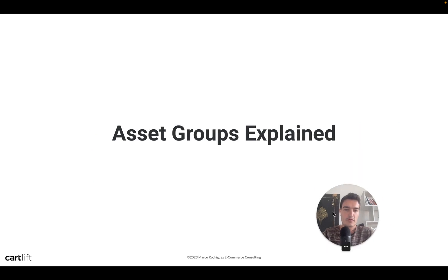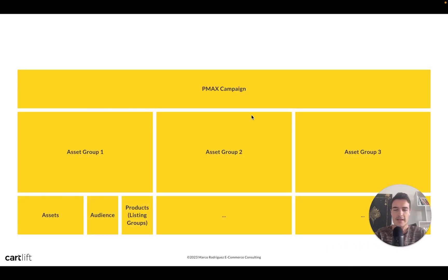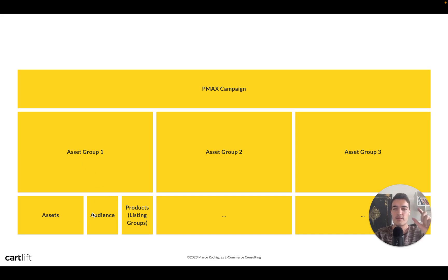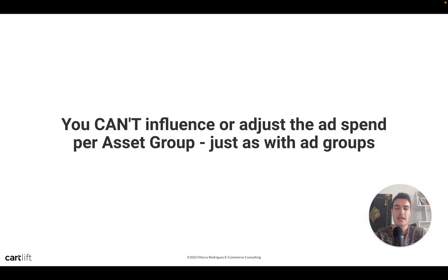Asset groups are essentially the ad groups of a Performance Max campaign. You have a Performance Max campaign at the top, with any number of asset groups underneath, and within those you store assets, audiences, and products — or listing groups. What's important to know is that an asset group does not have bidding settings at the group level. You cannot set a target ROAS per asset group — only for the entire campaign.